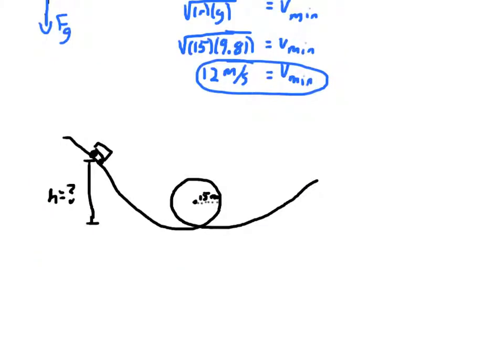Now let's expand on that problem. At what initial height must a hill be to allow you to make it through the loop? Most roller coasters start on a hill that then releases into loops. A lot of people after learning conservation of energy say you just need to start at the same height as the top of the loop — but that's not true. There's a minimum speed required because of centripetal force, so you still have to have some velocity at the top.